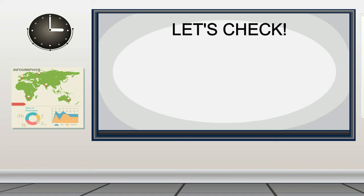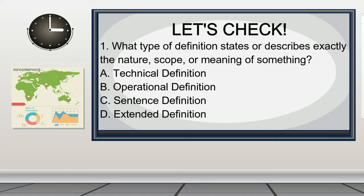Write your answer on a separate sheet of paper. Question 1: What type of definition states or describes exactly the nature, scope, or meaning of something? A. Technical definition. B. Operational definition. C. Sentence definition. D. Extended definition.